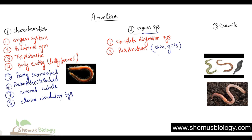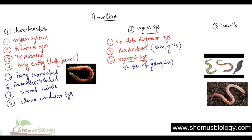The third important organ system is the nervous system. What they have in their nervous system is a pair of ganglia. They also have a double ventral nerve cord as well as lateral nerve cords.